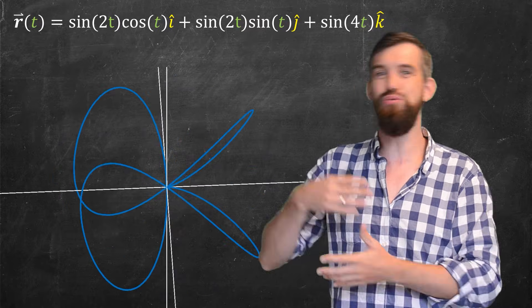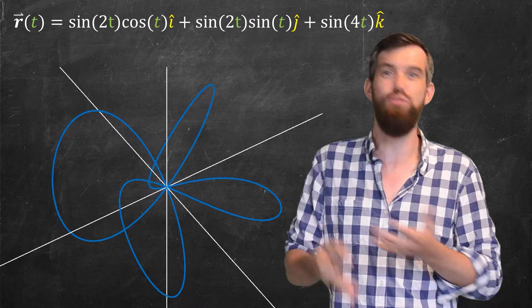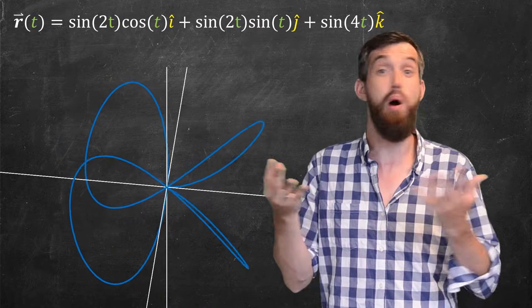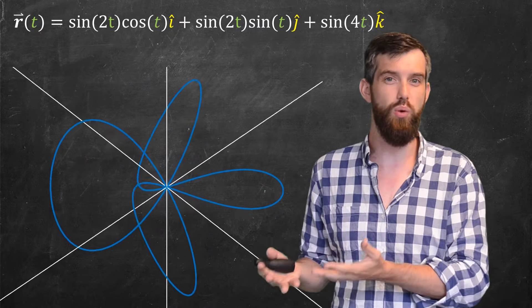So as you change what the r of t is going to be, you can get all sorts of really interesting things that may model all sorts of interesting behavior in the real world.